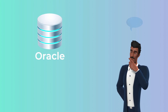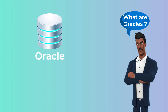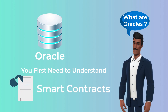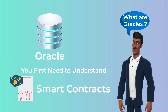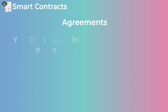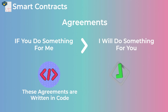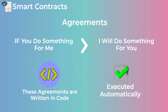To understand what oracles are and how they work, you first need to understand what a smart contract is, so let's do a quick recap. Smart contracts are simply agreements — if you do something for me, I do something for you in return — but these agreements are written in code and executed automatically when certain conditions are met.